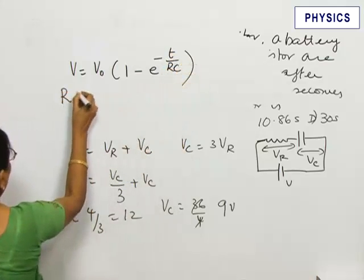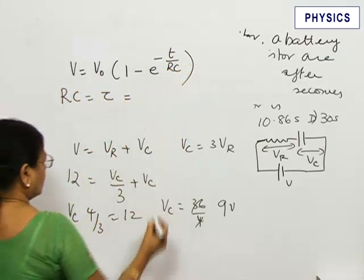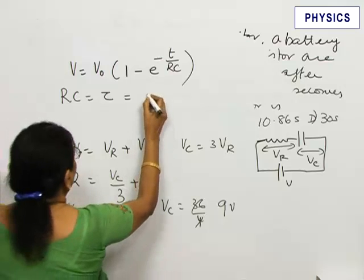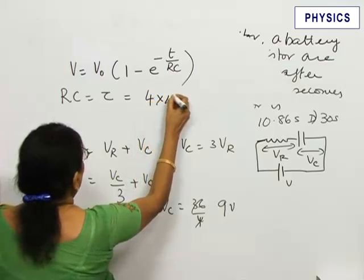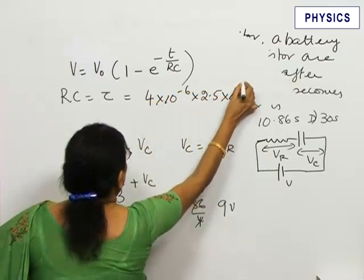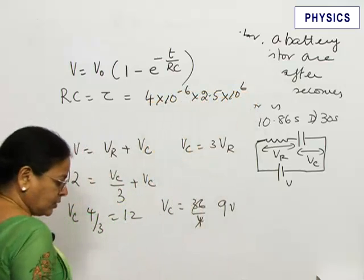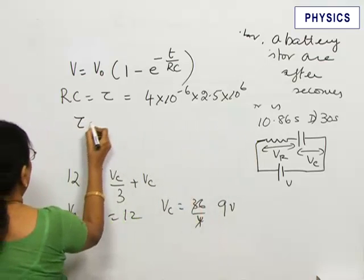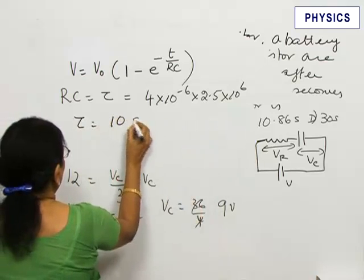RC is called the time constant of the circuit and we can now calculate that. RC equals 4 microfarad, 4 × 10^-6, times 2.5 megaohm, 2.5 × 10^6. This comes out to be, the time constant comes out to be 10 seconds.